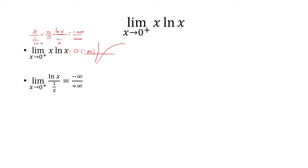We have negative infinity over positive infinity. L'Hopital's rule: take the derivative of natural log of x, becomes 1 over x. The derivative of 1 over x becomes negative 1 over x squared.